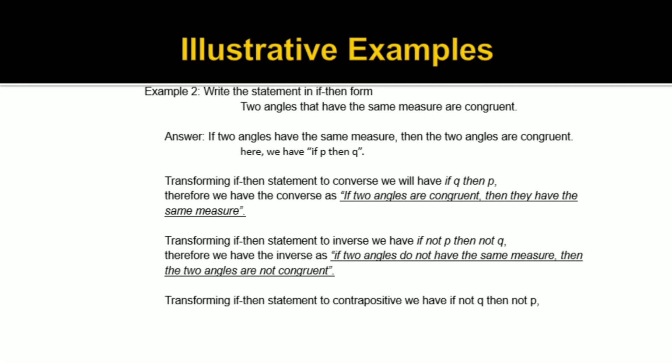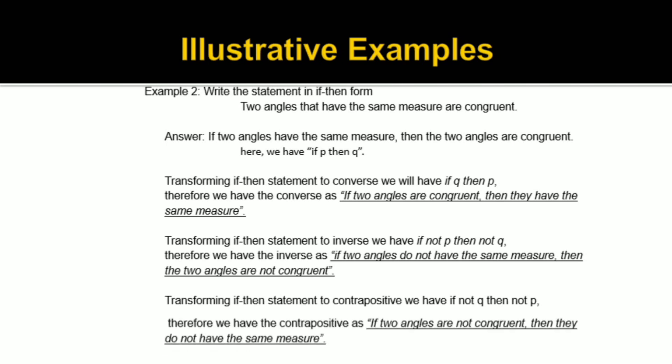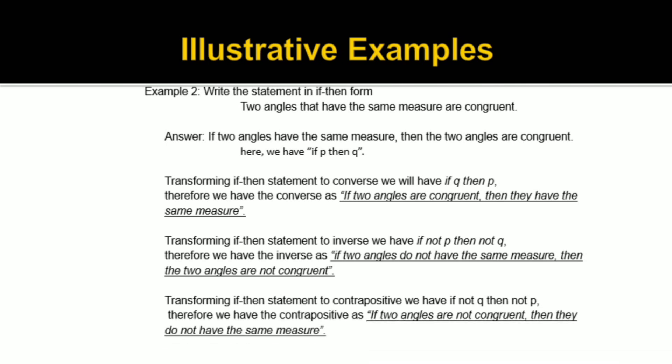Transforming the if-then statement to contrapositive, we have if not Q, then not P. Therefore, the contrapositive is: if two angles are not congruent, then they do not have the same measure.